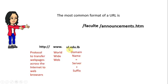The suffix includes extensions by type of site, like edu for education, org for organization, com for commercial, and mobi for sites compatible with mobile phones. And extensions by country, like LB for Lebanon, UK for United Kingdom, and FR for France. Then we have the directory: slash faculty slash announcements.